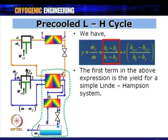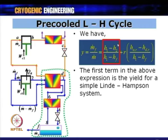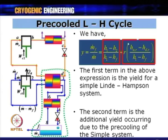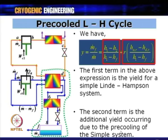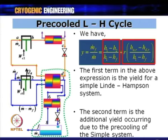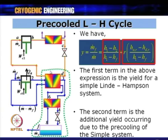The first term is the yield for the simple Linde-Hampson system, and the second term is the additional yield due to the pre-cooling arrangement. The increment in y depends on the enthalpy difference h_A − h_D across the three-fluid heat exchanger in the pre-cooling circuit and on the refrigerant flow ratio r.